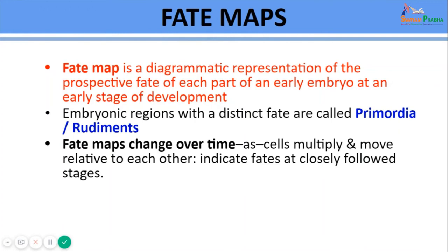We can define a fate map as a diagrammatic representation of the prospective fate of each part of an early embryo at an early stage of development. In a fate map, the embryonic regions with a distinct fate are called primordia or rudiments. As during development the cells multiply and change their positions with respect to each other, the fate maps also change with time — always indicating changes in the fates of blastomeres at closely followed stages.